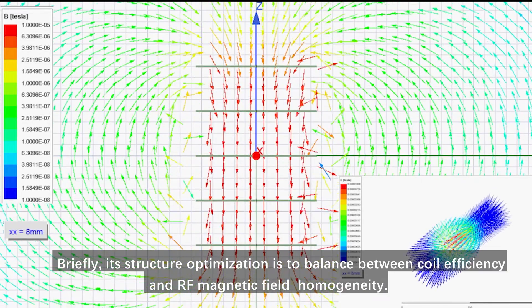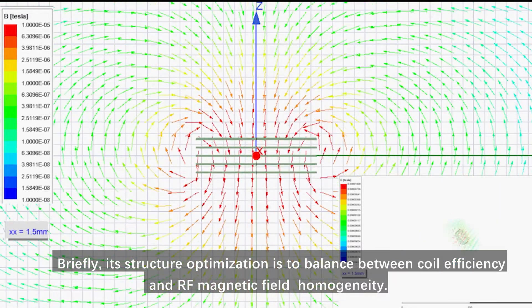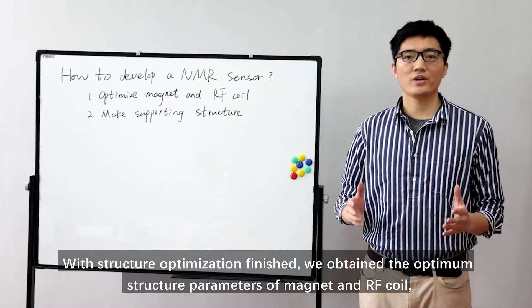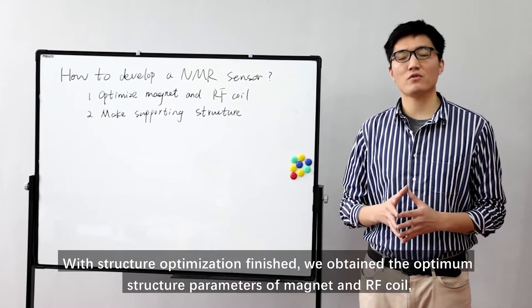Briefly, the structure optimization is to balance between coil efficiency and RF magnetic field homogeneity.